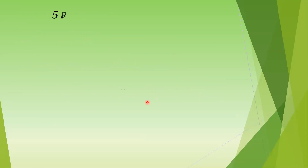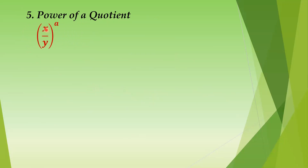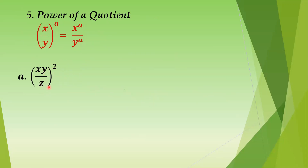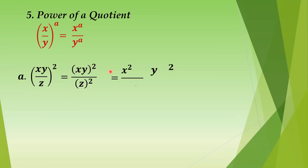Next: we have power of a quotient — related to number 4 but for quotients. We have the quantity x over y, raised to a, equal to x raised to a over y raised to a, the same way as done with products. Example: the quantity xy over z, squared — the numerator becomes xy squared, and the denominator becomes z squared. Applying power of a product to the top: x squared y squared over z squared.